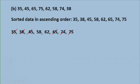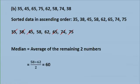So I said earlier, if we have an even number of observations, then we find the average, the mean, of the two middle values. So the median will be 58 plus 62 divided by 2, that is 60.